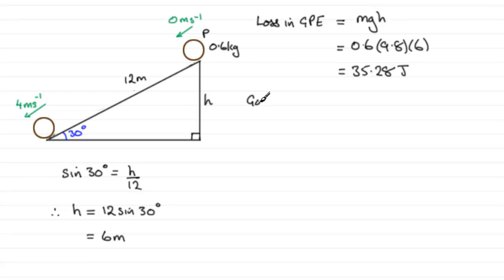So we can talk about the gain in kinetic energy, and we know that it is a half mv squared. So we can put our values in as a half times the mass of 0.6 times v, which is 4, and that's squared. If you work this out, you get 4.8 joules.